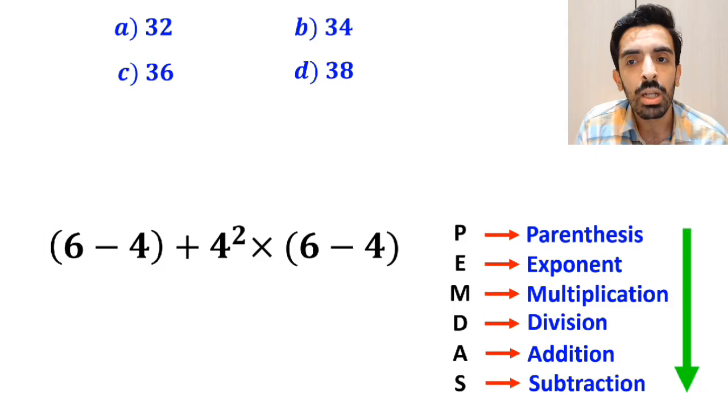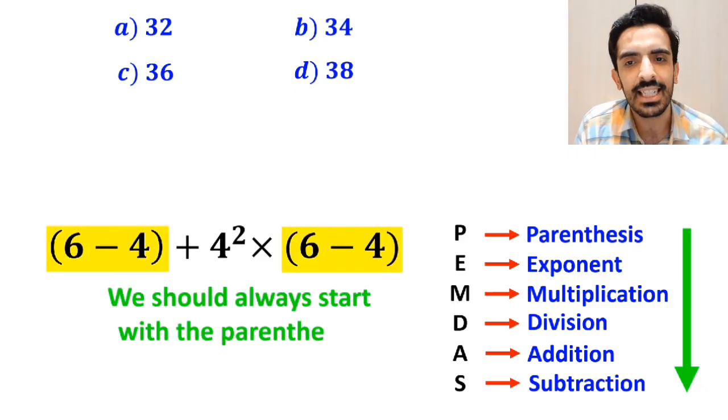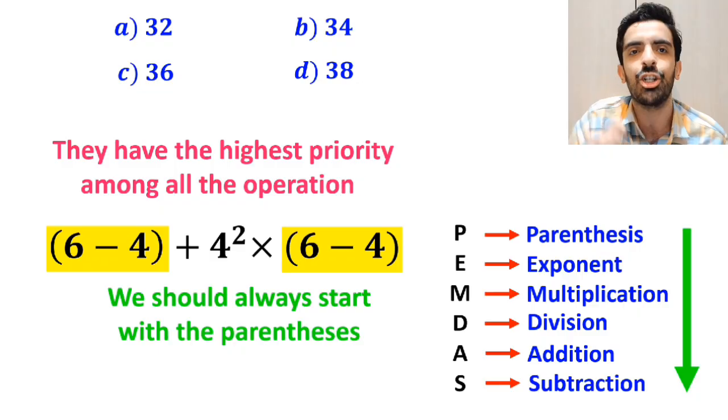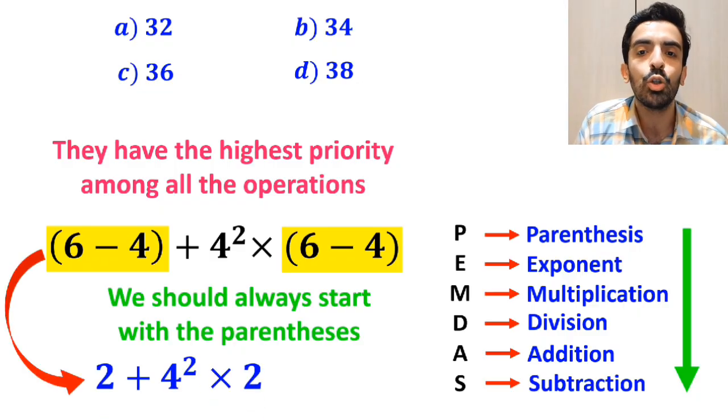According to the PEMDAS rule, we should always start with the parenthesis, since they have the highest priority among all the operations. So, instead of the original expression, we can rewrite it as 2 plus 4 squared multiplied by 2.